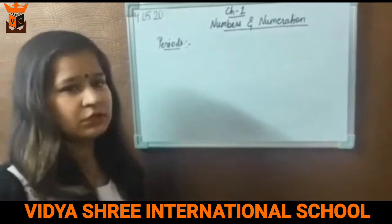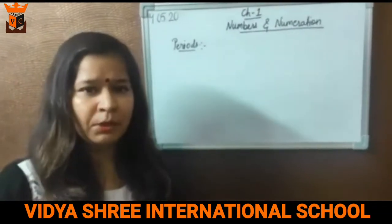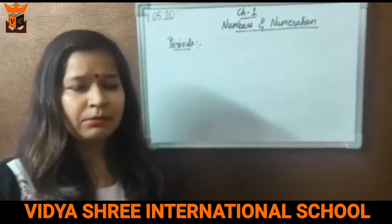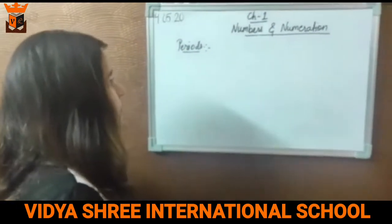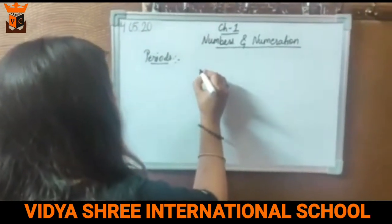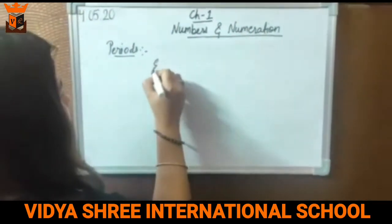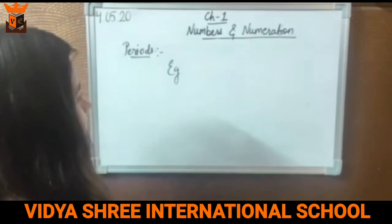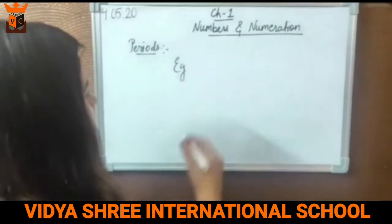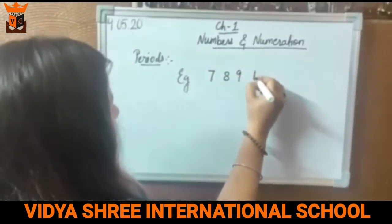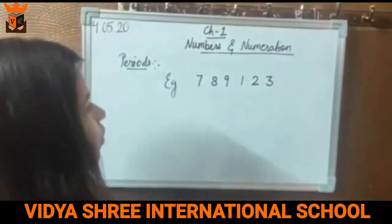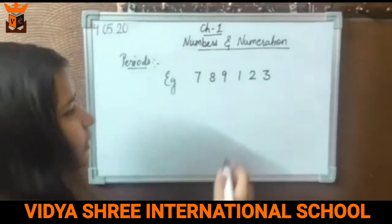We shall start with periods. What are the periods? In numbers, some digits are divided into some periods. Now we will see how many periods there are. Suppose I am taking here an example of a 6-digit number: 7, 8, 9, 1, 2, 3. What is the place value of each digit here?